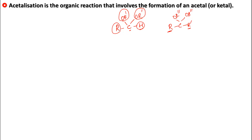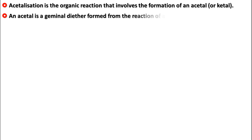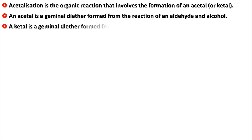So we're going to learn how to convert a given organic compound — let's say an aldehyde or a ketone — into an acetyl or a ketyl. An acetyl is a geminal diether formed from the reaction of an aldehyde and an alcohol, and similarly a ketyl is formed when we react a ketone with an alcohol.